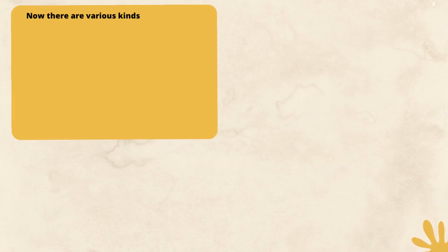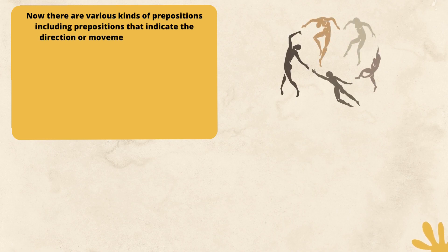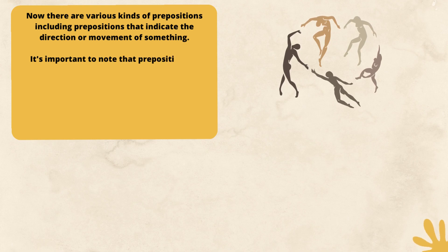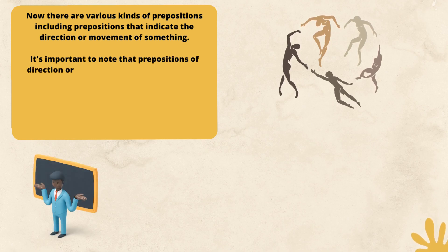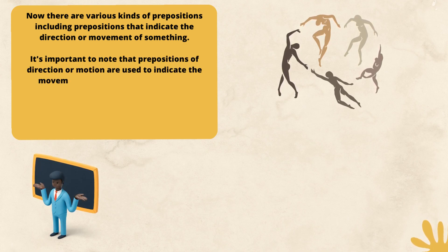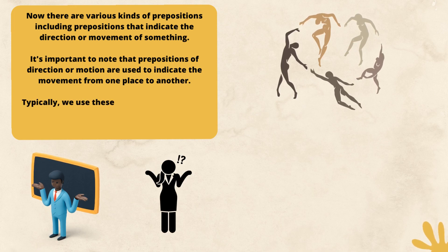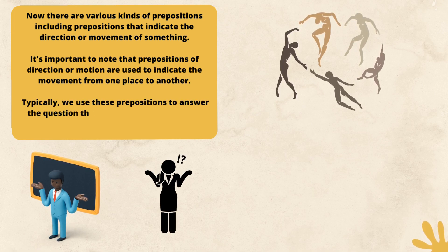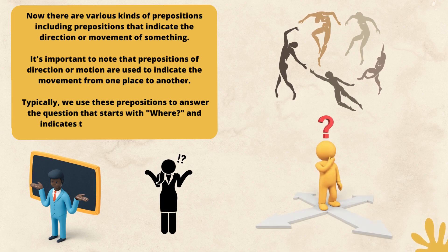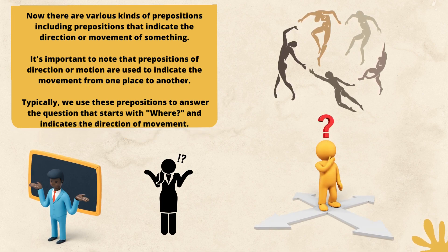There are various kinds of prepositions, including prepositions that indicate the direction or movement of something. It's important to note that prepositions of direction or motion are used to indicate the movement from one place to another. Typically, we use these prepositions to answer the question that starts with 'where' and indicates the direction of movement.